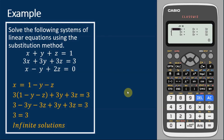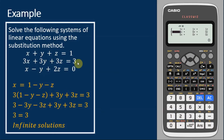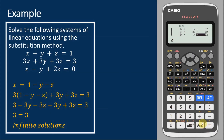Now let's verify using the calculator. Entering the coefficients: for the first equation, 1, 1, 1, constant 1; for the second equation, 3, 3, 3, constant 3; for the third equation, 1, 1, 2, constant 0. The calculator shows that this system of equations has infinitely many solutions, which means our answer is correct.